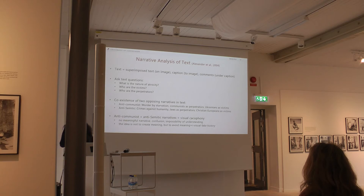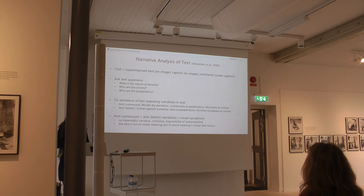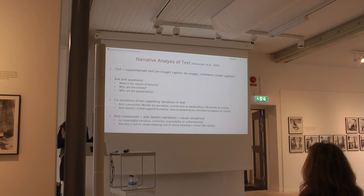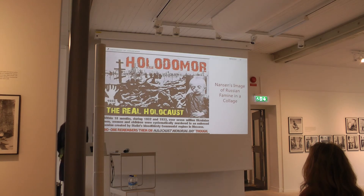The idea becomes not to create meaning to understand, but to avoid meaning. This is what I mean by visual fake history — when you put so much information, and this information is contradictory, that you don't know anymore where the truth is. I would like to give a few examples from Instagram images showing what I mean by this visual cacophony.